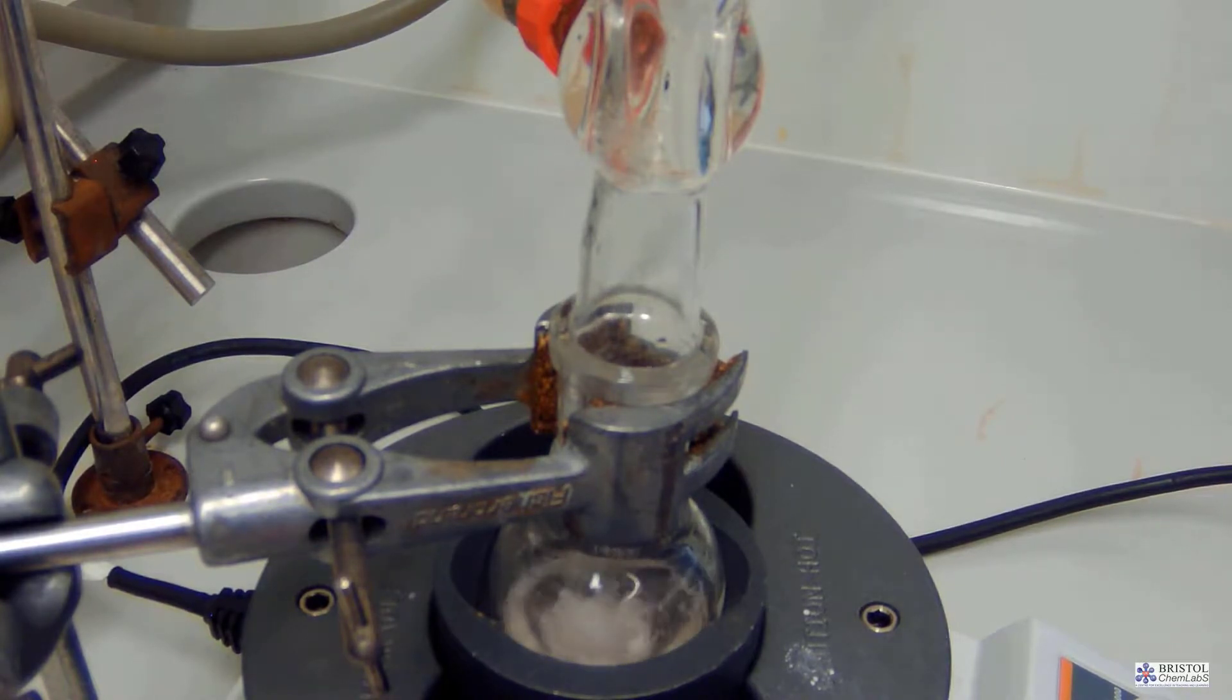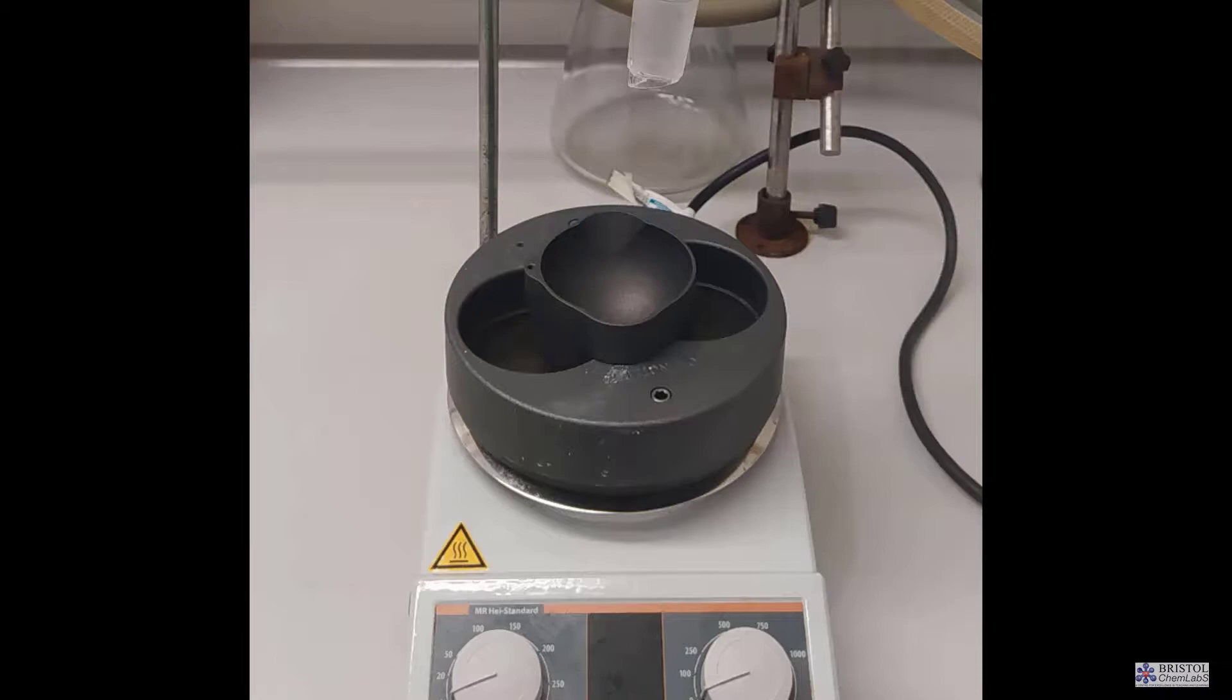If you notice there is an additional piece to a normal heating mantle that surrounds the lower half of the round bottom flask to make sure heat is delivered more evenly.